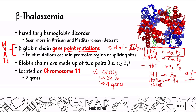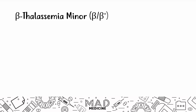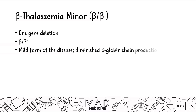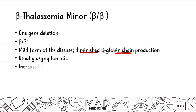Let's talk about the types of beta thalassemias. Number one, you have beta thalassemia minor. Beta thalassemia minor occurs due to one gene deletion. This is going to be the mild form of the disease. You're going to have diminished beta globin chain production — not completely reduced, but diminished. Most patients are going to be asymptomatic. You will see an increase in the red blood cell count because your body is producing more in order to carry oxygen. The diagnosis can be confirmed via hemoglobin electrophoresis.